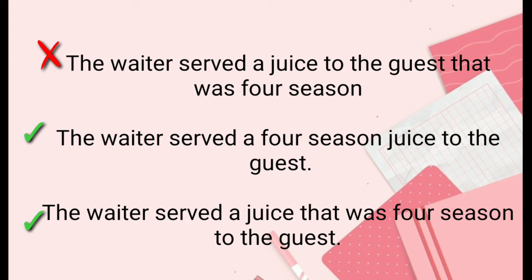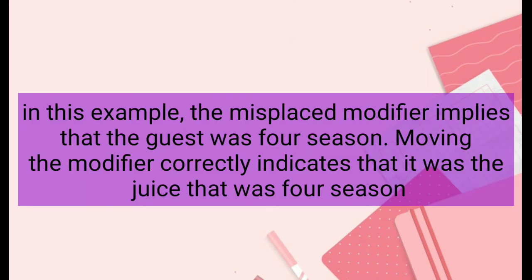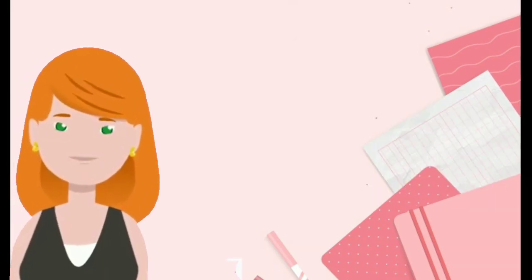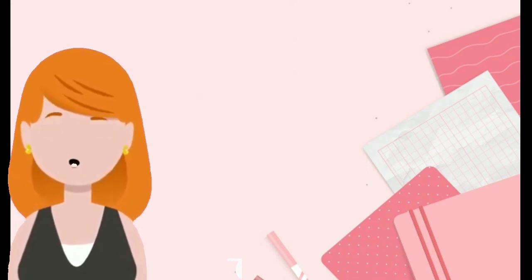Let's take a look at these examples. As you can see in this example, the misplaced modifier implies that the guess was for season. Moving the modifier correctly indicates that it was the juice that was for season. Now let's proceed to dangling modifiers.